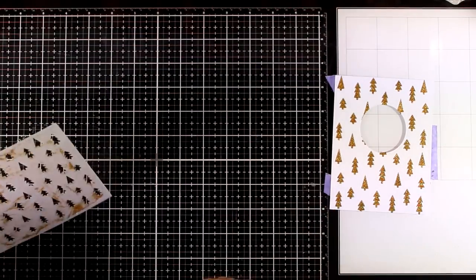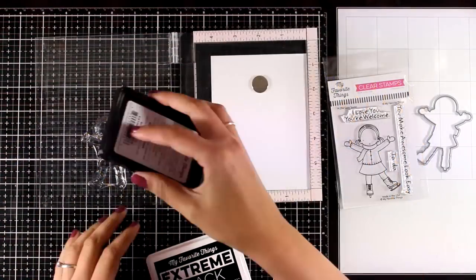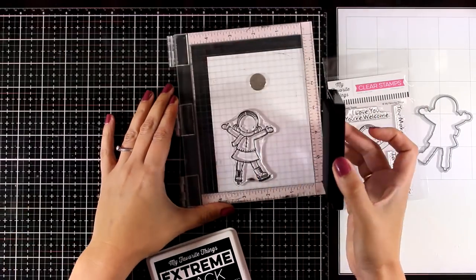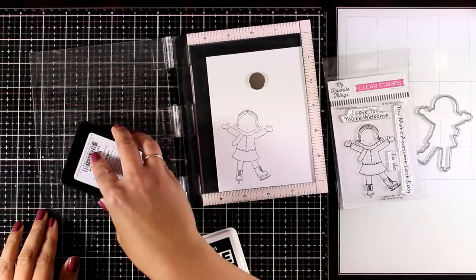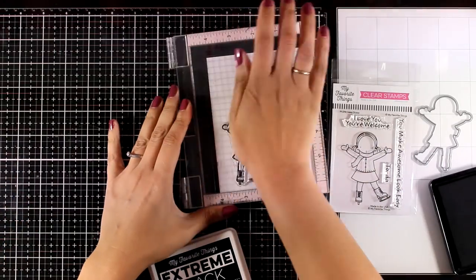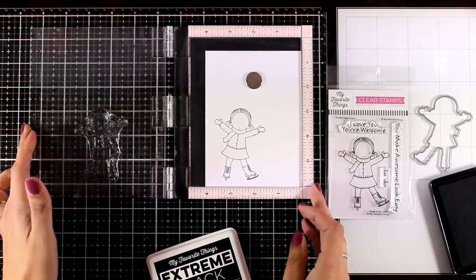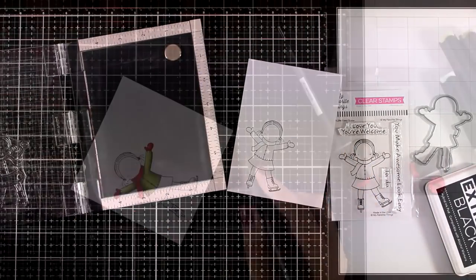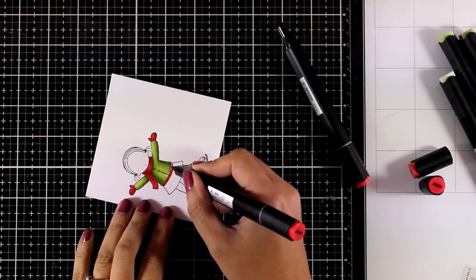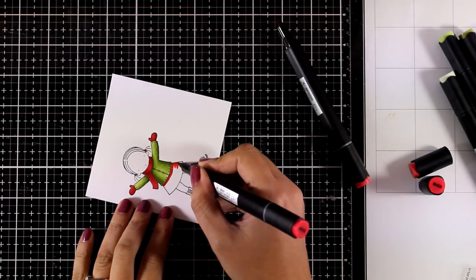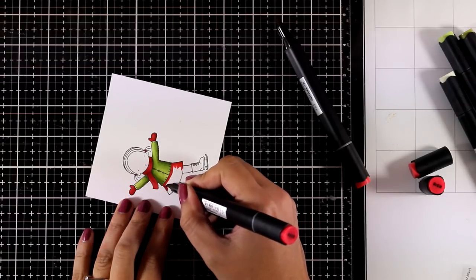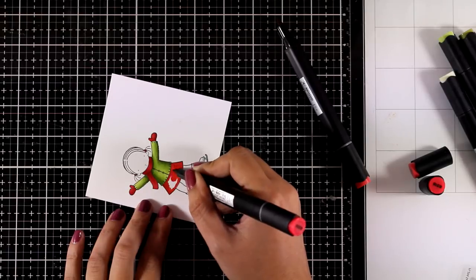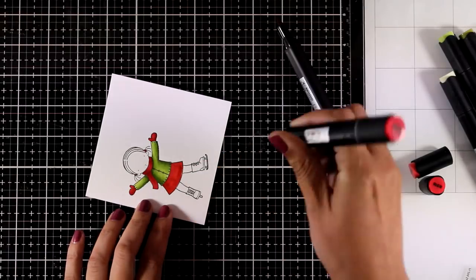Now it's time to do some stamping. This stamp set is called Sassy Skater and the little girl is from the Pure Innocence collection by My Favorite Things. I'm going to stamp her a couple of times to get a good impression. For that I'm using Extreme Black ink by My Favorite Things which is alcohol marker friendly. I'm going to go ahead and color everything with my alcohol markers. I'm working with a traditional Christmas color combo today, so greens and reds.